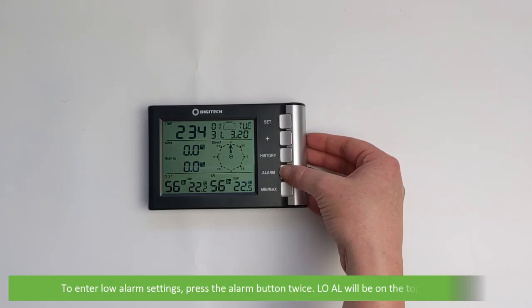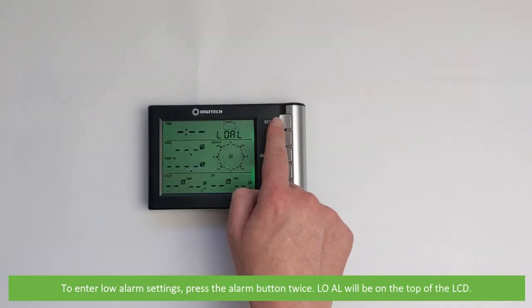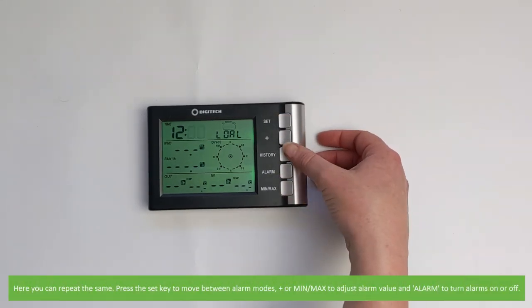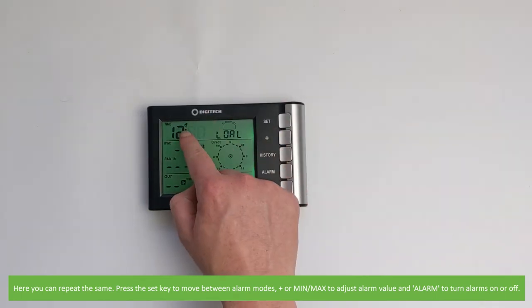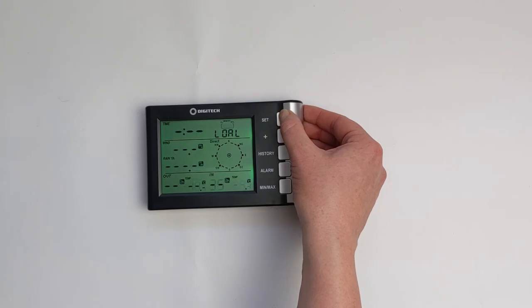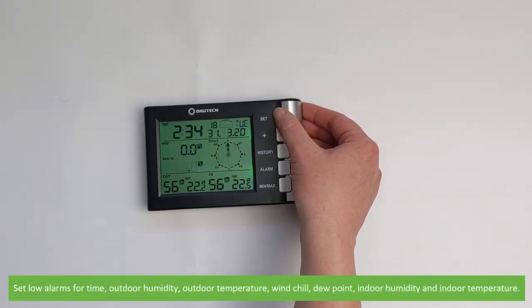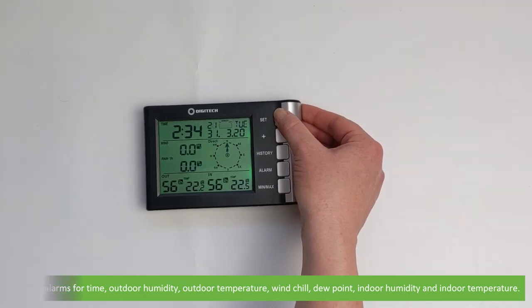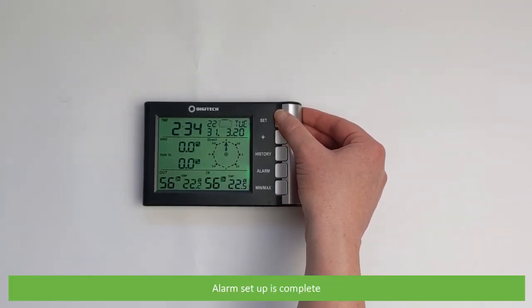To enter low alarm settings press the alarm button twice. L-O-A-L will appear on the top of the LCD. Here you can repeat the same. Press the set key to move between alarm modes, plus or min max to adjust the alarm value and alarm to turn alarms on or off. Set low alarms for time, outdoor humidity, outdoor temperature, wind chill, dew point, indoor humidity and indoor temperature. Alarm set up is now complete.